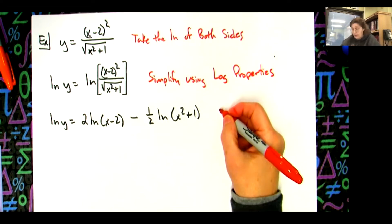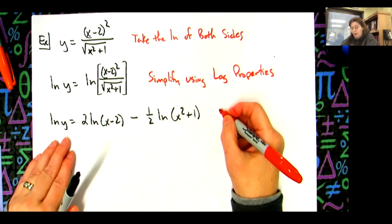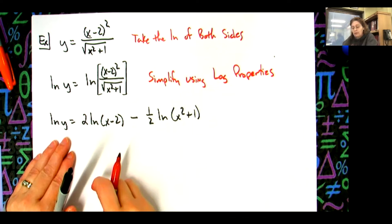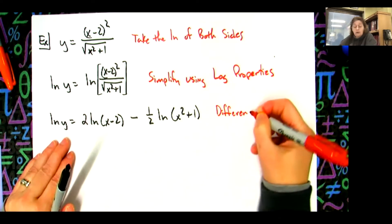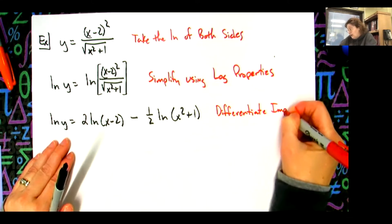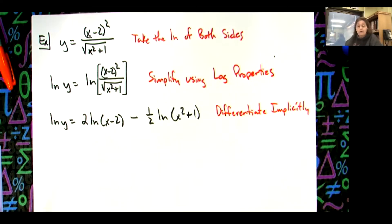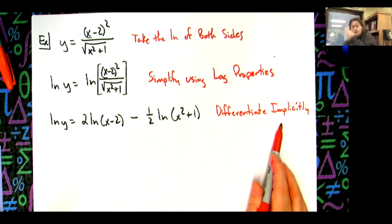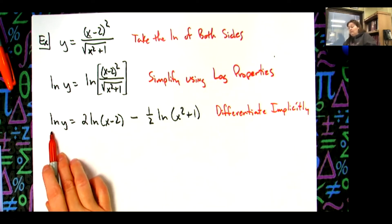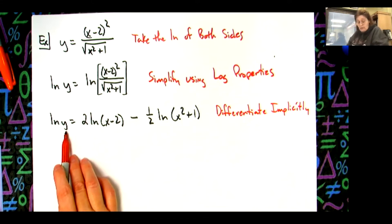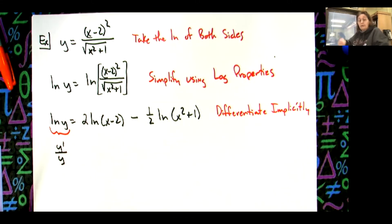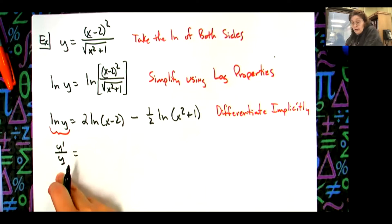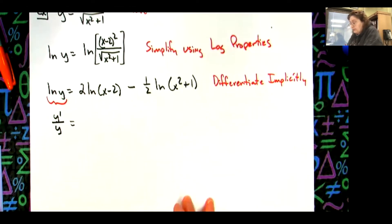Now I differentiate implicitly with respect to x, because on the left I have the natural log of y, and y is a function of x. So I'm doing implicit differentiation. The derivative of natural log of y gives me y prime over y — that's always going to be the case, it's always the same once you get the hang of it.